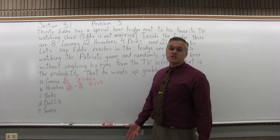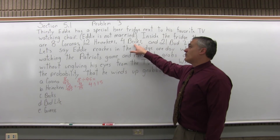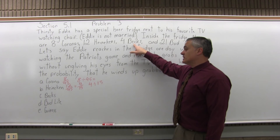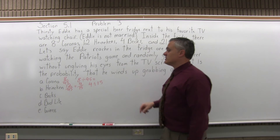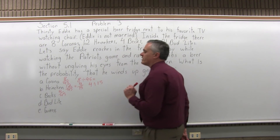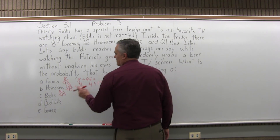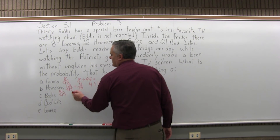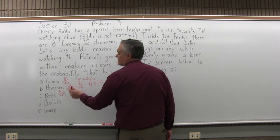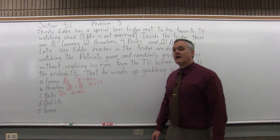Part C, Becks. What's the probability that he reaches in without looking and gets a Becks? There are 4 bottles of Becks in the fridge out of 45 beers altogether, so the probability is 4 over 45. That doesn't really reduce. You could turn it into a decimal by doing 4 divided by 45, or make it a percent, but 4 over 45 is fine.